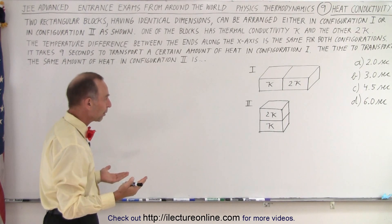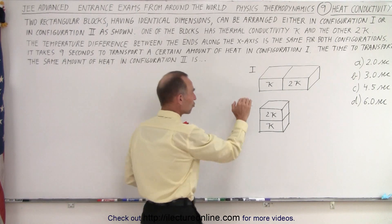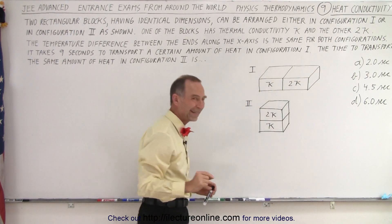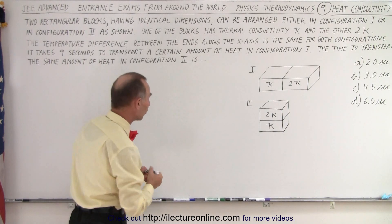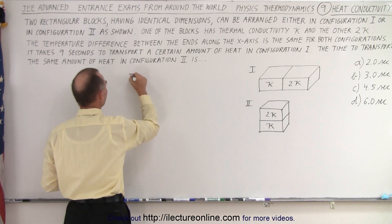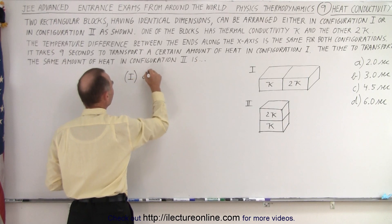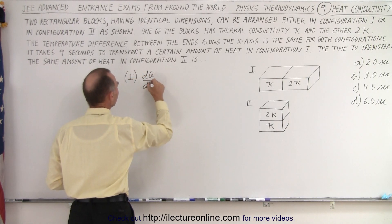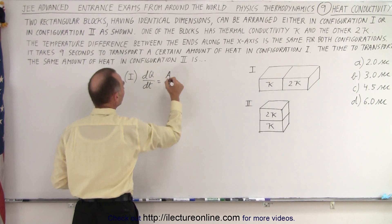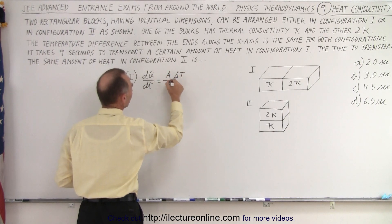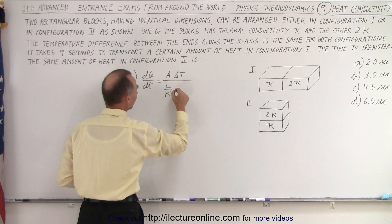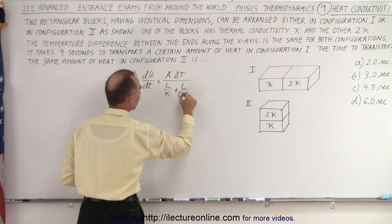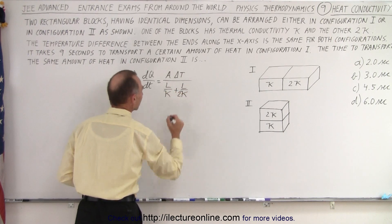So how do we do that? Well, they tell us that a certain amount of heat travels through configuration 1 in 9 seconds, and it's a two-layer system. For configuration 1, we can say that dQ/dt equals the cross-sectional area times the temperature difference divided by — since we have two layers — L over K for the first layer plus L over 2K for the second layer.